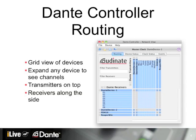Let's start with the routing function of Dante Controller. When opened, Dante Controller always presents a network grid view that displays all the Dante devices found on the network. If you click the plus sign by any device to expand it, it will reveal all the channels on that device. Transmitting channels are shown along the top axis — these are your outputs — and receiving channels or inputs are shown along the side axis.